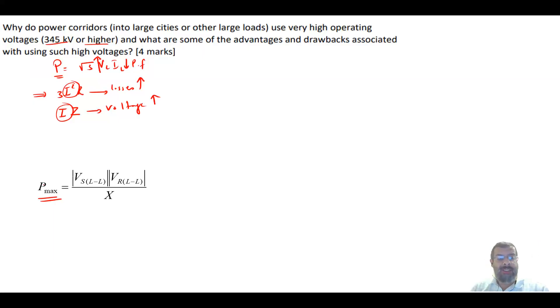There's another advantage you are gaining, which is that P max equals the sending and receiving voltages multiplied divided by X between them. This comes from the formula VS line to line times VR line to line divided by X sine delta. This is the maximum power that can be sent when this is one, so we cannot send more than that. This is called the stability limit of the line. If I increase the voltage level, I am also increasing the stability limit.